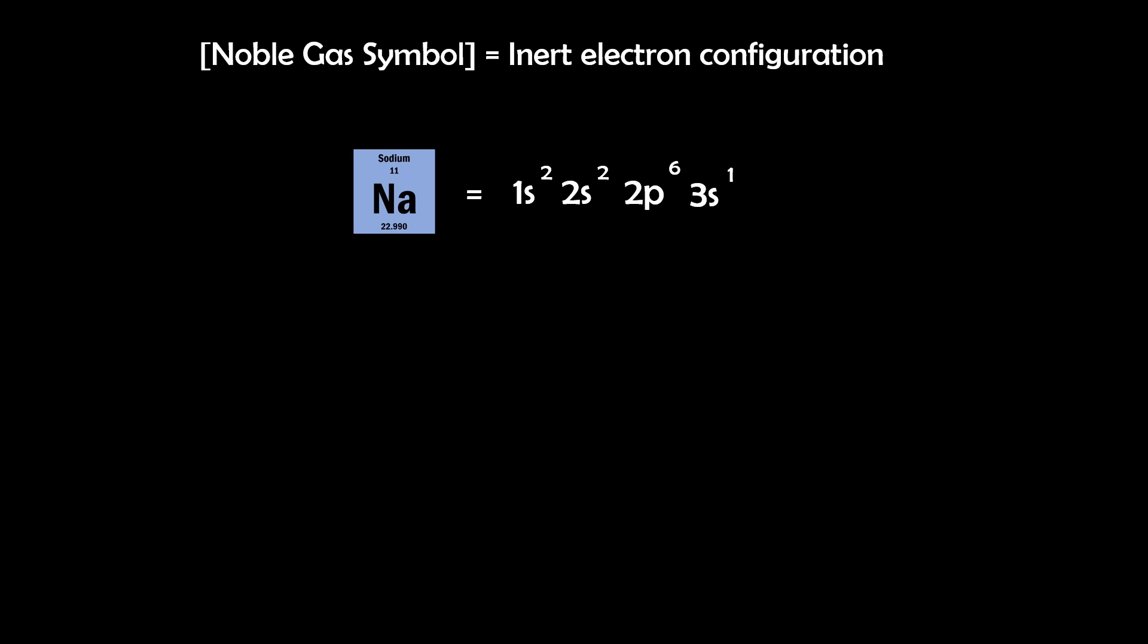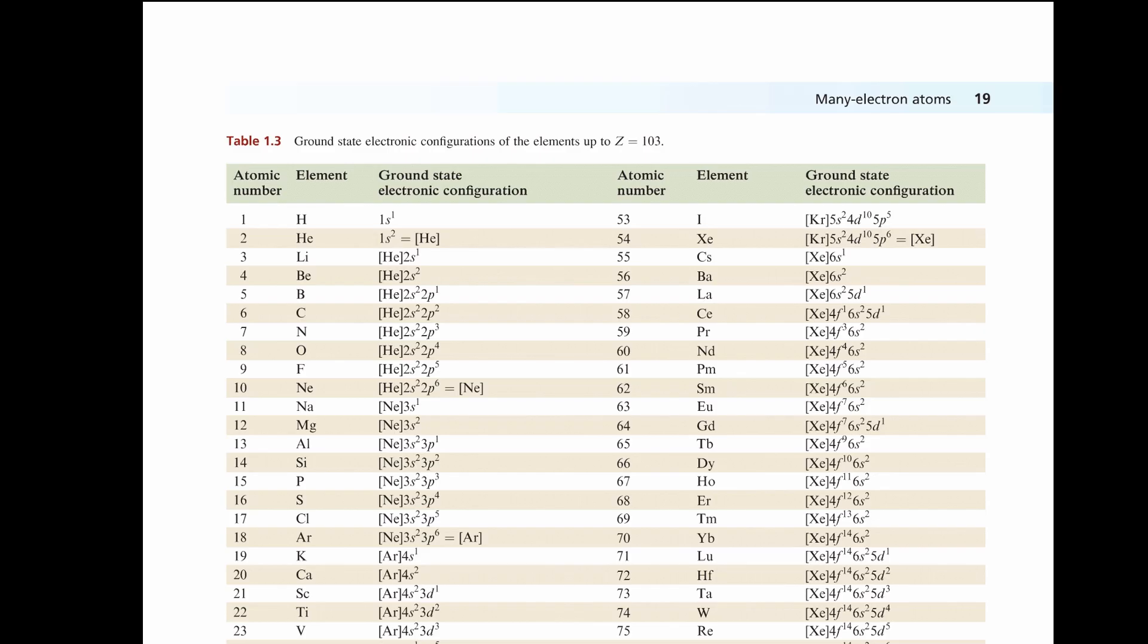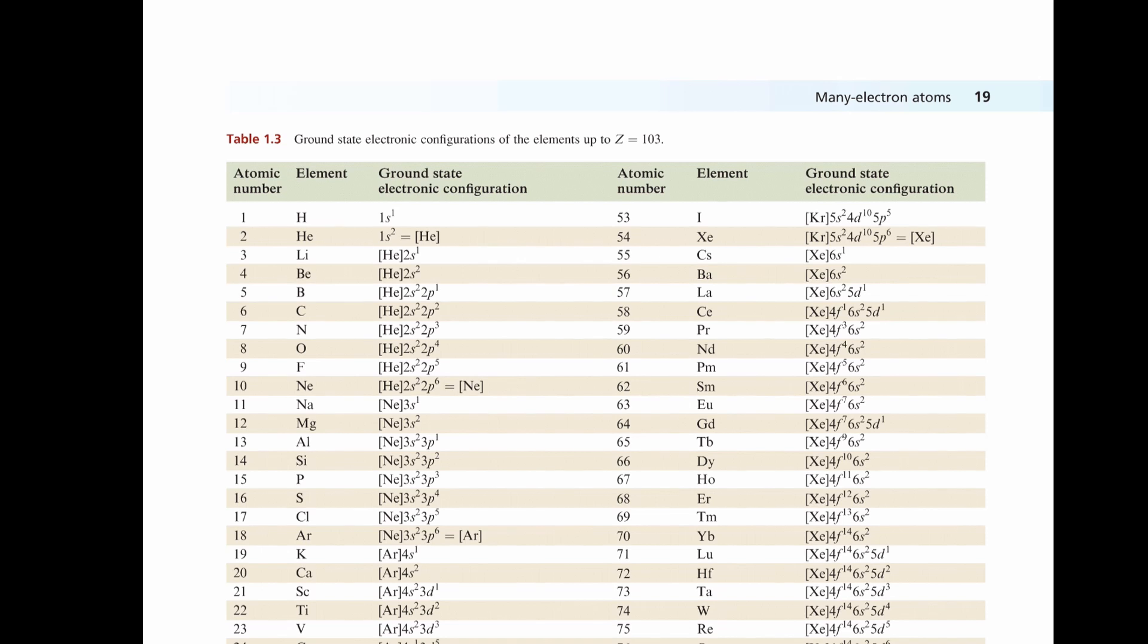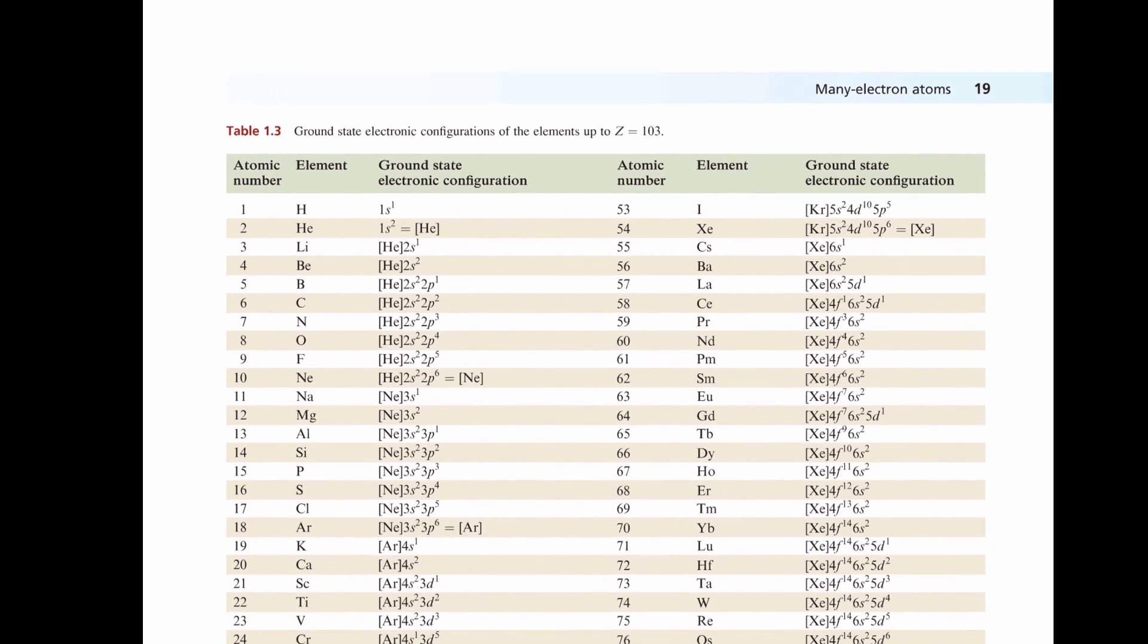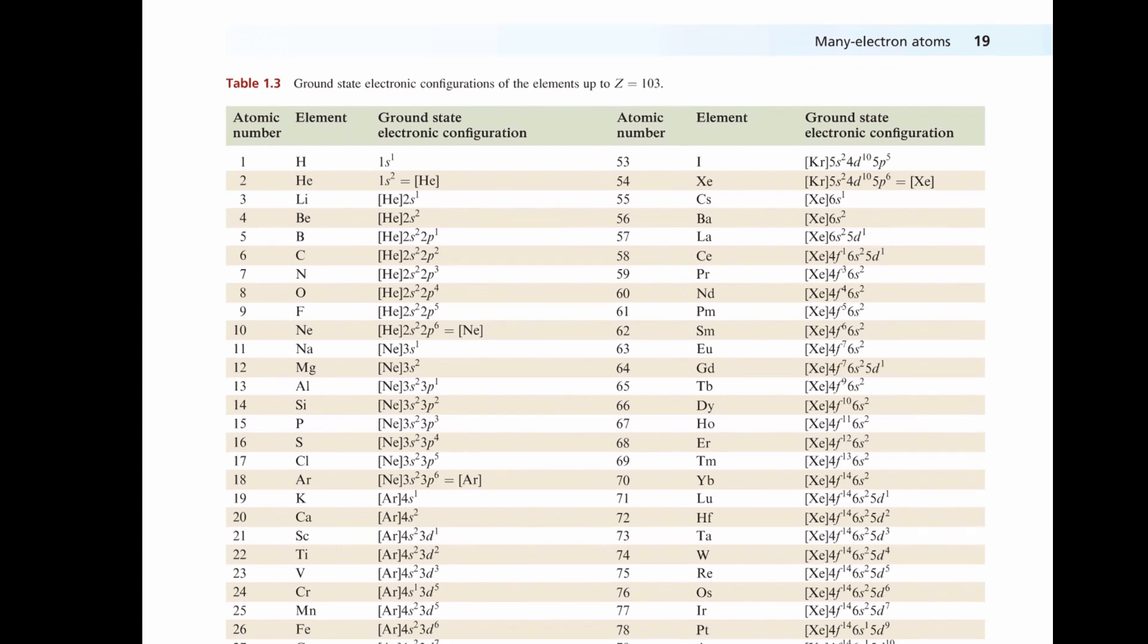It can be written as [Ne] 3s1, where Ne represents the configuration of neon, which is 1s2, 2s2, 2p6. And you can see how this cancels out. So below, you'll find a table using this convention showcasing a range of ground state electron configurations that have been experimentally verified.